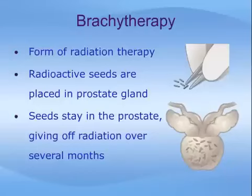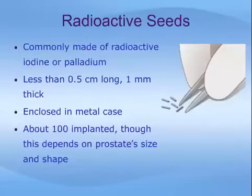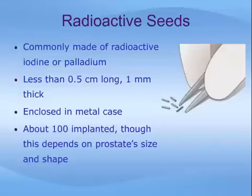Brachytherapy is a form of radiation therapy that uses radioactive seeds or pellets placed directly into the prostate under ultrasound guidance. The seeds are left there permanently, and the radiation is given off gradually over a period of months. Each seed, commonly made of radioactive iodine or palladium, is less than half a centimeter long and less than one millimeter thick, enclosed in a metal case — about the size and length of a pencil lead tip. About 80 to 120 seeds are implanted in the prostate, depending on the prostate size and shape.